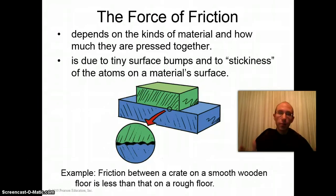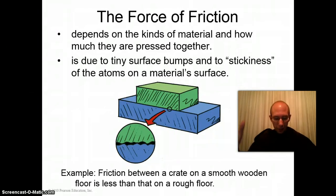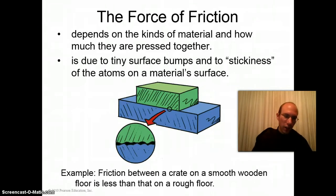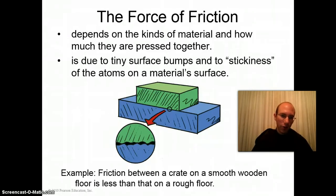It depends on what materials you have and how much they're pressed together. If you have a block sitting on a concrete surface, which is very, very rough, and the block weighs 1,000 pounds or something like that, you're going to have potentially a lot of friction. But if you have a hockey puck sitting on an ice rink, the surface is very smooth, and the hockey puck doesn't weigh that much, so you don't have a lot of friction.